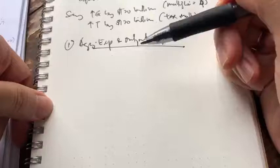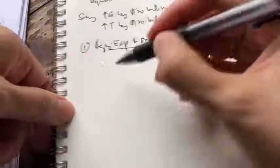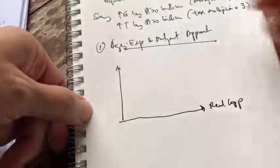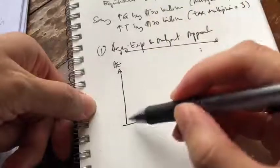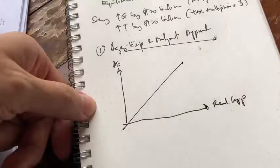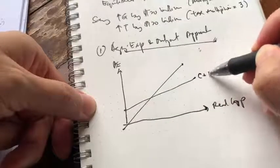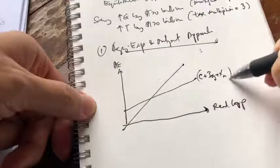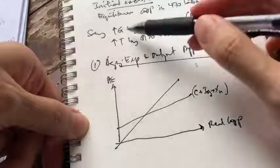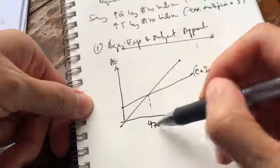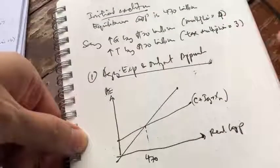Now let's look at this example using the first approach: the aggregate expenditure and output approach. First, we sketch the Keynesian cross. Here we have real GDP on one axis, aggregate expenditure on the other, and the 45-degree line as the reference point. Initially, our aggregate spending is C plus IG plus XN — note there's no G yet because we haven't put in the changes. The initial equilibrium GDP is 470 billion, as given in the question.